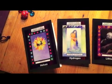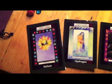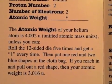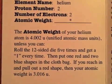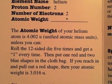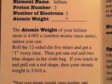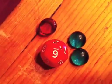Helium, for example, has a little game inside that says this. The atomic weight of your helium is 4.002 Unified Atomic Mass units, unless you can roll the 12-sided die five times and get a one every time. Then put one red and two blue shapes into a cloth bag. If you pull out the red shape, then your atomic weight is 3.016. But the chances of this happening is .000137%.